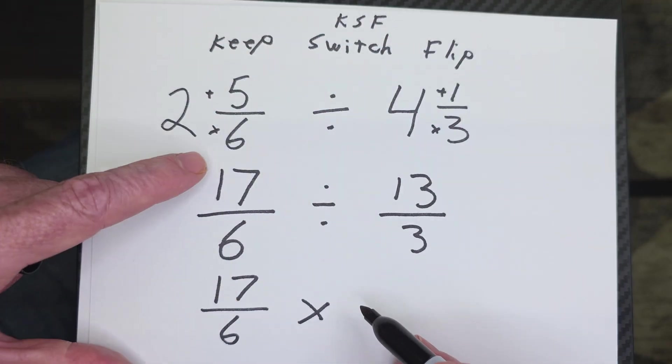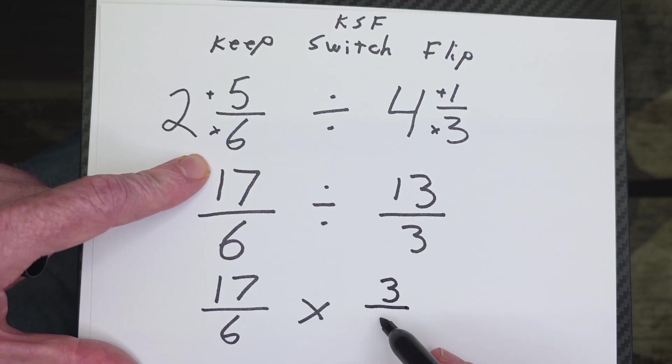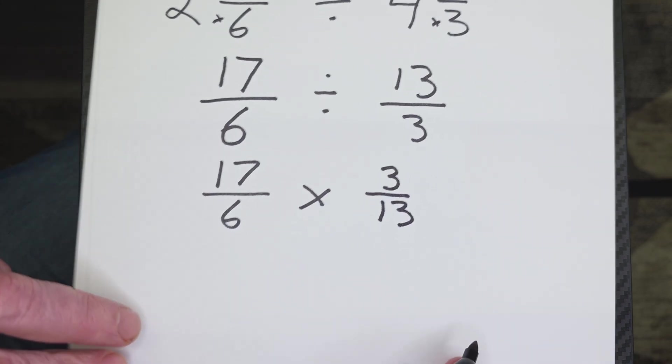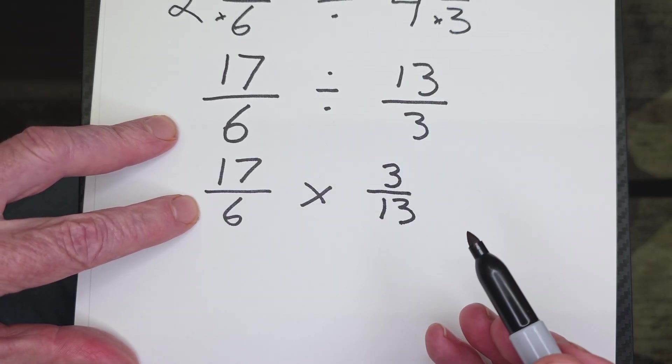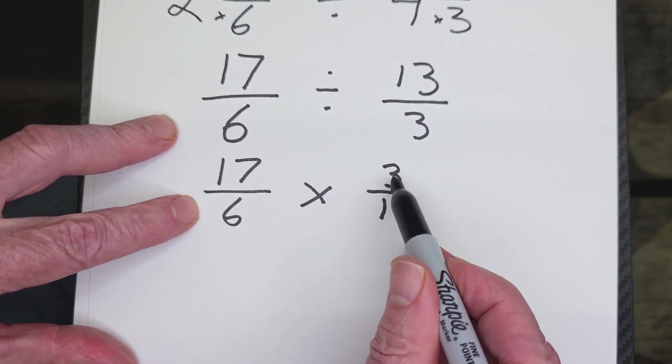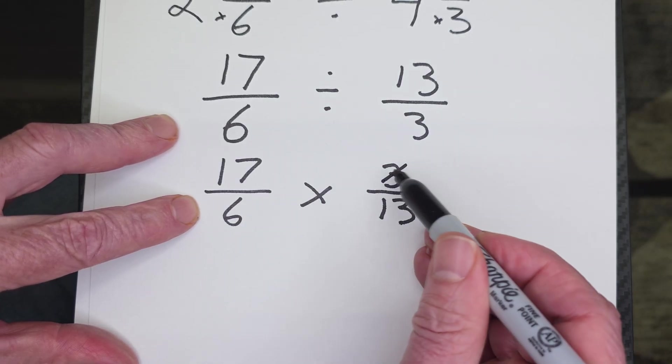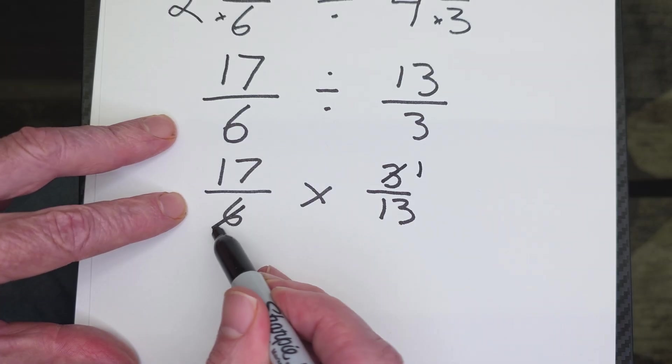So the denominator will be the numerator, the 3 will be up on top, and then the 13 will be down below. So now we are all set to multiply. So before I start multiplying, I always like to see, can I simplify it? Of course, I can take a 3 out of here and a 3 out of here. So I'm going to cross this one out. 3 divided by 3 is 1, and 6 divided by 3 is 2.